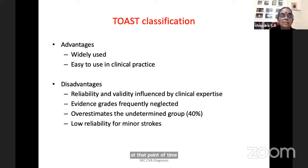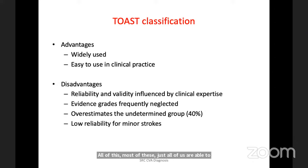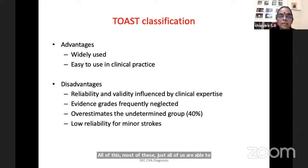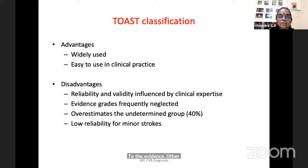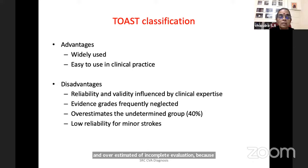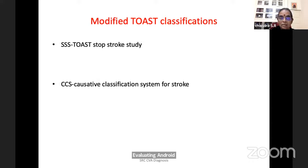The advantage of TOAST classification is that it is widely used and easy to apply — most tests can be done in any center. Reliability and validity are influenced by clinical expertise. Disadvantages include: evidence grades frequently neglected, other comorbidities may not be included, overestimation of the undetermined group because of incomplete evaluation, and no reliability for minor stroke. A modified TOAST is the Stop Stroke Study, and another modified TOAST is the Causative Classification System for stroke, both covering disadvantages of the original TOAST criteria.